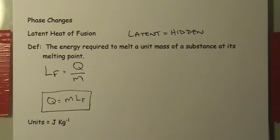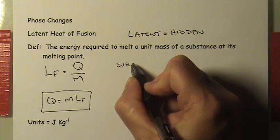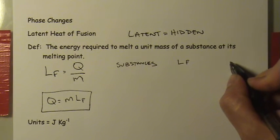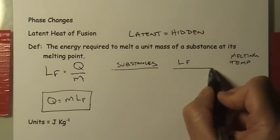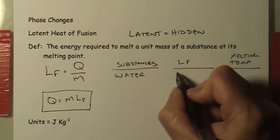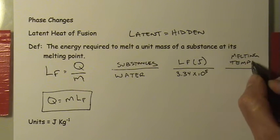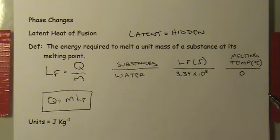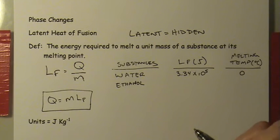To give an idea of how large some latent heats are, let's look at a small number of substances with their latent heats of fusion and melting temperatures. Starting with water — the latent heat of fusion for water is 334,000 joules per kilogram, and its melting temperature is 0°C.